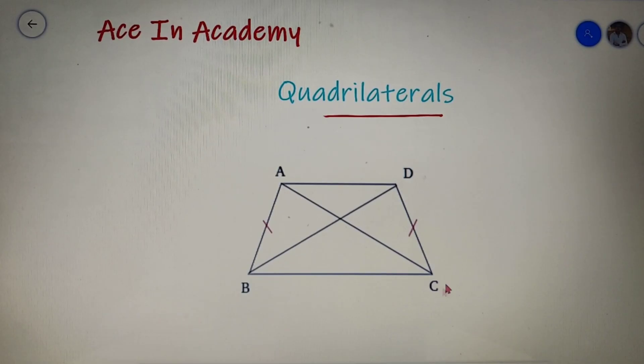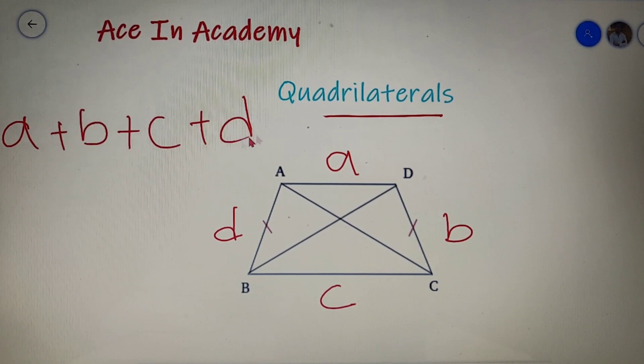The sum of the sides of the quadrilateral is equal to the perimeter. So if I name AD as A, DC as B, BC as C and AB as D, then the perimeter of a quadrilateral is equal to A plus B plus C plus D.